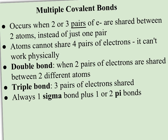Another option is a multiple covalent bond, which occurs when two or three pairs of electrons are shared between two atoms instead of just one pair. Sometimes more than one pair needs to be shared to get things stable. Atoms won't share four pairs — a quadruple bond physically can't work because the nuclei would be right on top of each other and, being positively charged, would repel each other. A double bond is when two pairs are shared; a triple bond is when three pairs are shared. There's always one sigma bond, and the second bond is a pi bond.